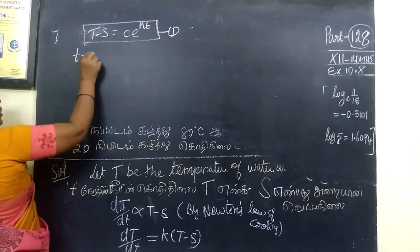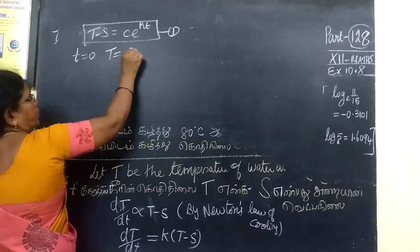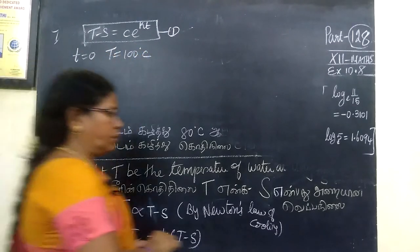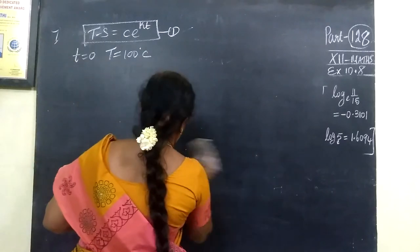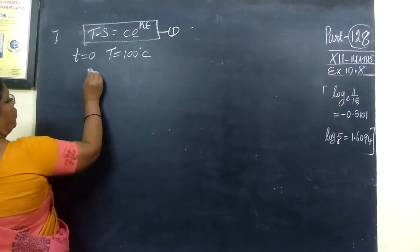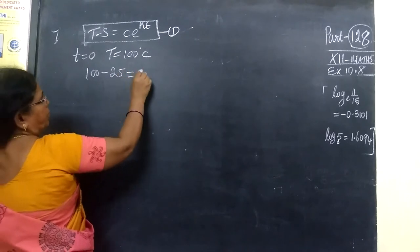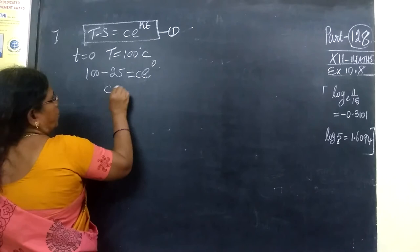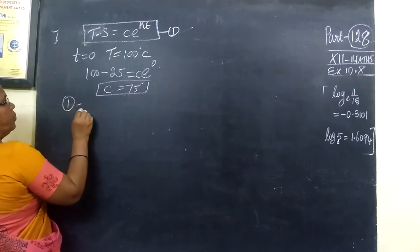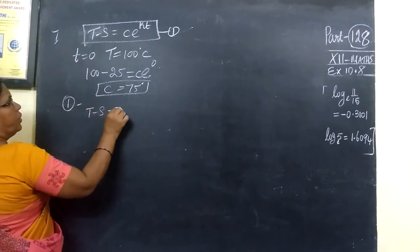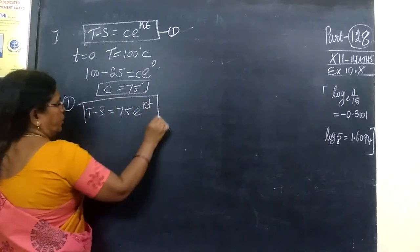When t equals 0, in the initial stage, t is 0 and temperature is 100 degrees Celsius. So T minus S equals 75 degrees. Therefore C equals 75, and the equation becomes T minus S equals 75·e^(kt).